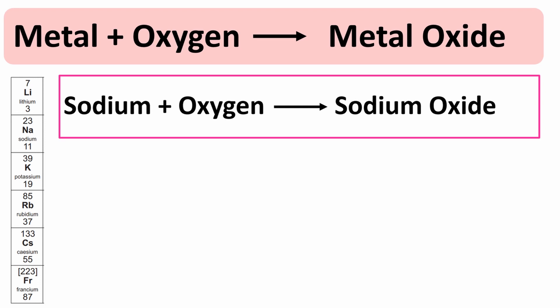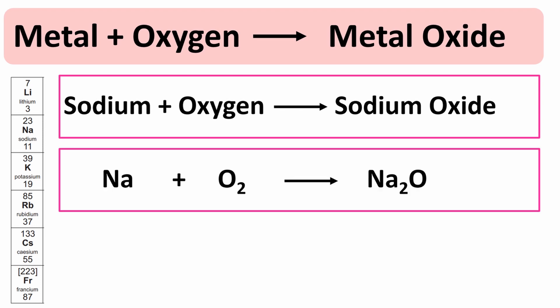So this is the word equation for the reaction. Sodium plus oxygen forms sodium oxide. And the symbol equation, again we do the similar thing to what we did to the previous one to balance it. We have sodium plus oxygen makes sodium oxide and we include state symbols. So solid, gas and solid.